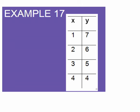In this example, we are asked whether or not the relation is a function. Remember that the definition of a function is that for every input there's exactly one output. So the easiest way to do this when we're looking at a table is to look at all of your input values and make sure that nothing here repeats.